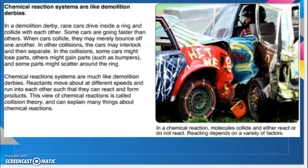In a demolition derby, race cars drive inside a ring and collide with each other. Some cars are going faster than others. When cars collide, they may merely bounce off one another. In other collisions, the cars may interlock and then separate. In some collisions, cars might lose parts; others might gain parts such as bumpers — like a bumper from one car might stick onto another car. And some parts might scatter around the ring.